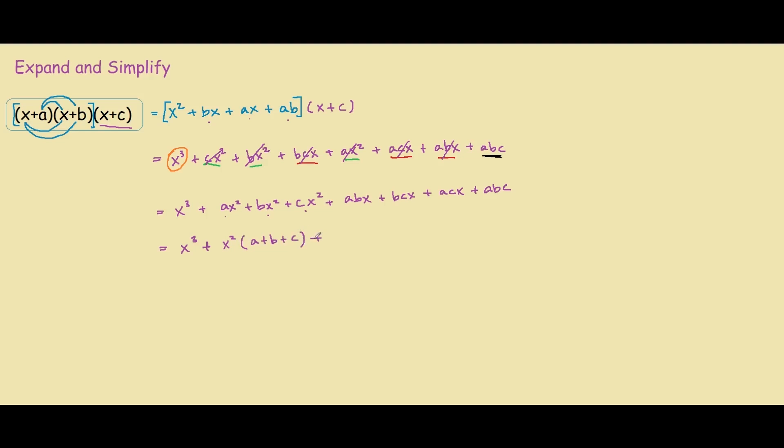And if we factor out the x from this term, and this term, and this term, we have x outside of ab plus bc plus ac. And lastly, we add our constant, abc. And this line over here is your answer. And this is how you expand three different brackets.